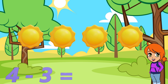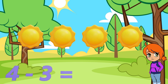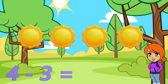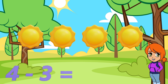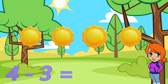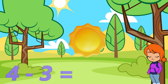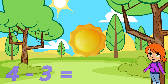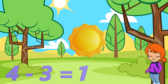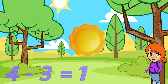Next up we have 4 subtract 3. 4 take away 3 — what are we left with? We have 4 and we take away 3. That's right, we're left with 1. 4 subtract 3 equals 1.